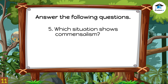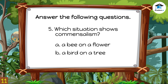Question 5: Which situation shows commensalism? A) A bee on a flower, or B) A bird on a tree. The correct answer is B — a bird on a tree. The bird gets shelter and food from the tree while the tree is left unharmed. You are awesome — you got them right!